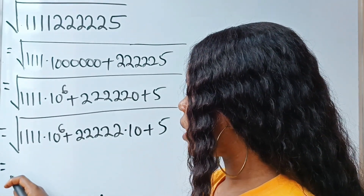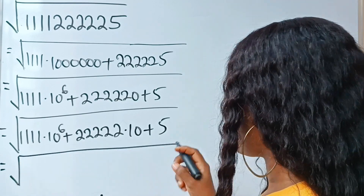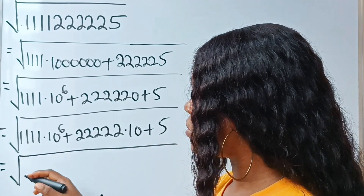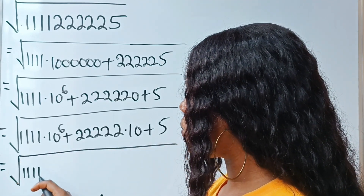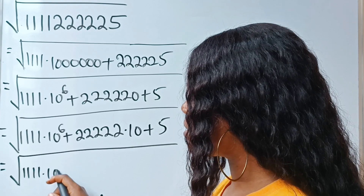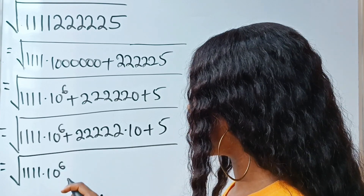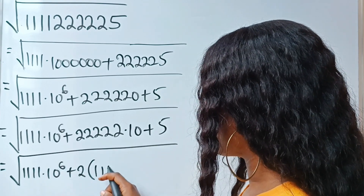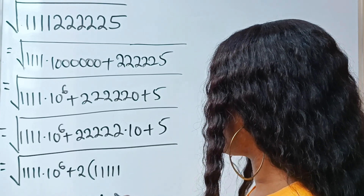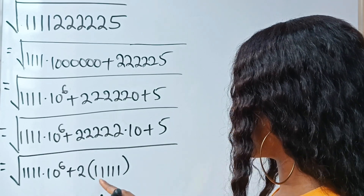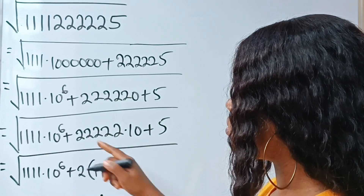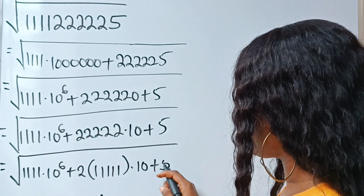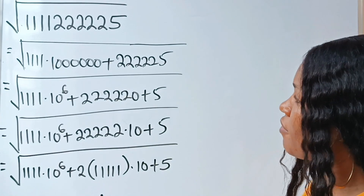So we keep simplifying. This is equal to the square root of 1,111 multiplied by 10 to the power of 6, plus 2 brackets 1,11,111 — because 2 multiplied by this will still give us this — multiplied by 10, plus 5.